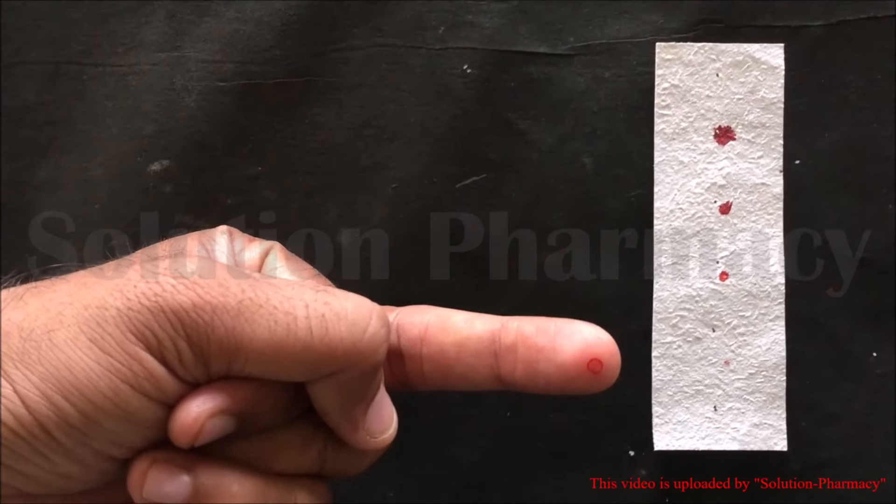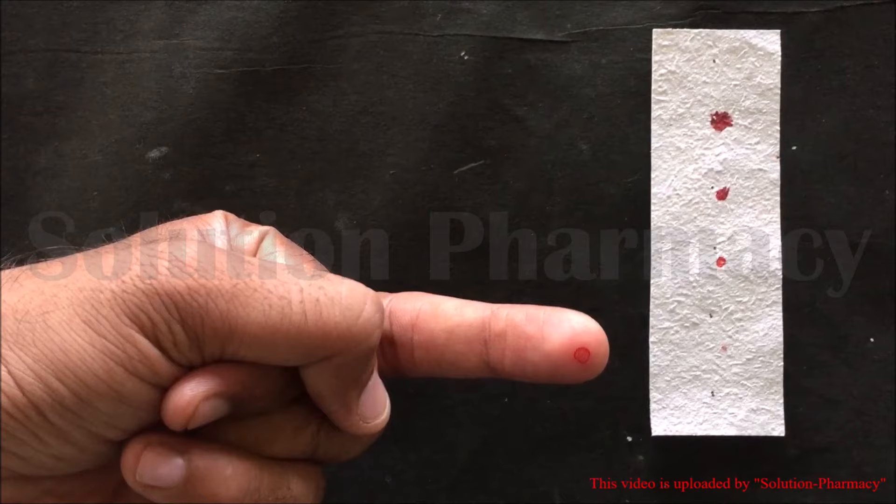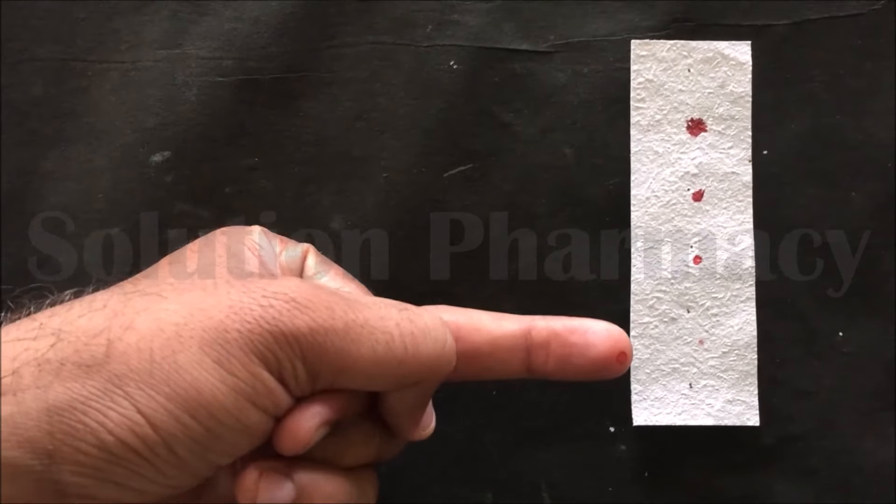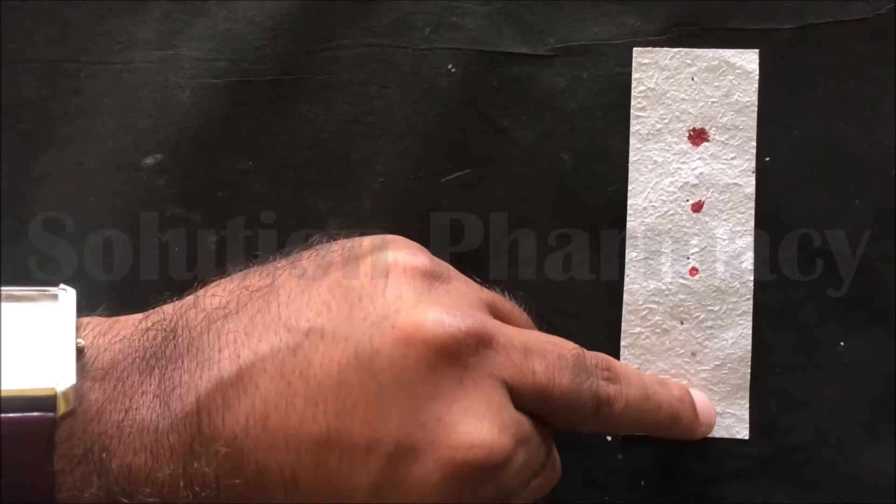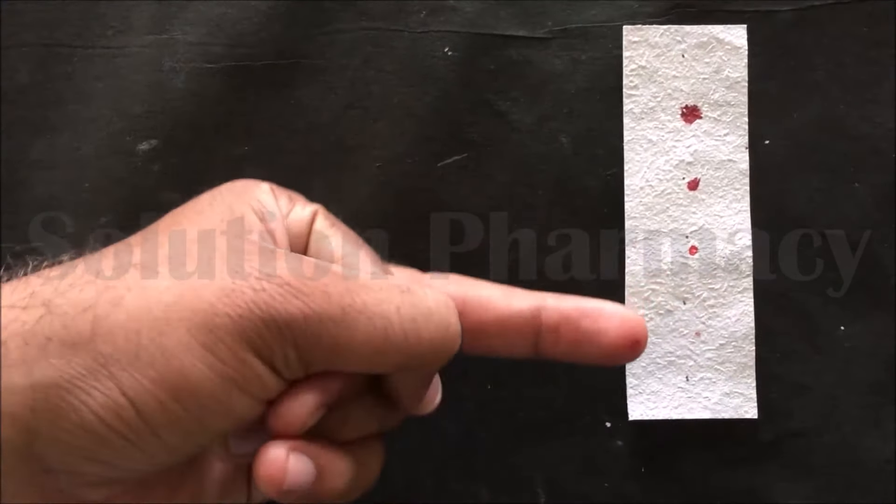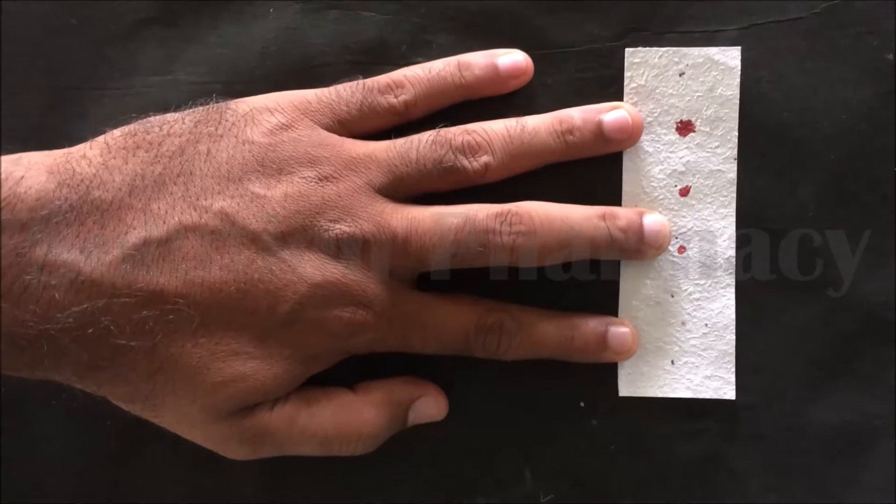After 30 seconds, touch the fingertip gently on the filter paper. You can clearly observe here that there is no spot or stain of the blood on the filter paper appearing. This time is known as the bleeding time.